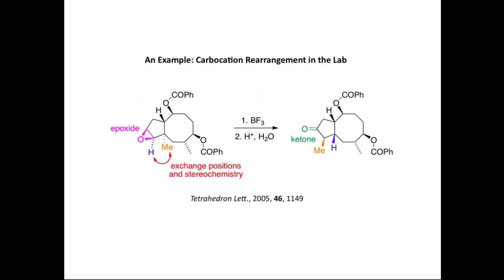Let's now look at a carbocation rearrangement that takes place in the laboratory. This is a very interesting transformation of a molecule containing an epoxide, which is converted into a ketone using a two-step process. Very interestingly, the hydrogen and methyl groups change position in the product, and they also change stereochemistry: in the starting material they are both pointing away from us, but in the product they are both pointing towards us. The mechanism has been postulated to involve a series of carbocations.